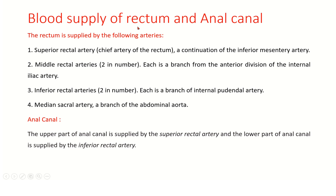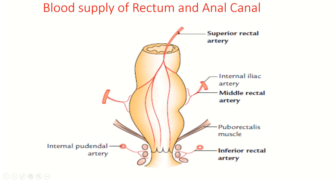The rectum is supplied by the superior rectal artery — the chief artery of the rectum, a continuation of the inferior mesenteric artery — the middle rectal artery (two in number, each from the anterior division of the internal iliac artery), and the inferior rectal artery (two in number, each from the internal pudendal artery). The median sacral artery also contributes. The upper part of the anal canal is supplied by the superior rectal artery, and the lower part by the inferior rectal artery. You can see the superior rectal artery dividing into two branches, the middle rectal artery from the internal iliac, and the inferior rectal artery from the internal pudendal artery.